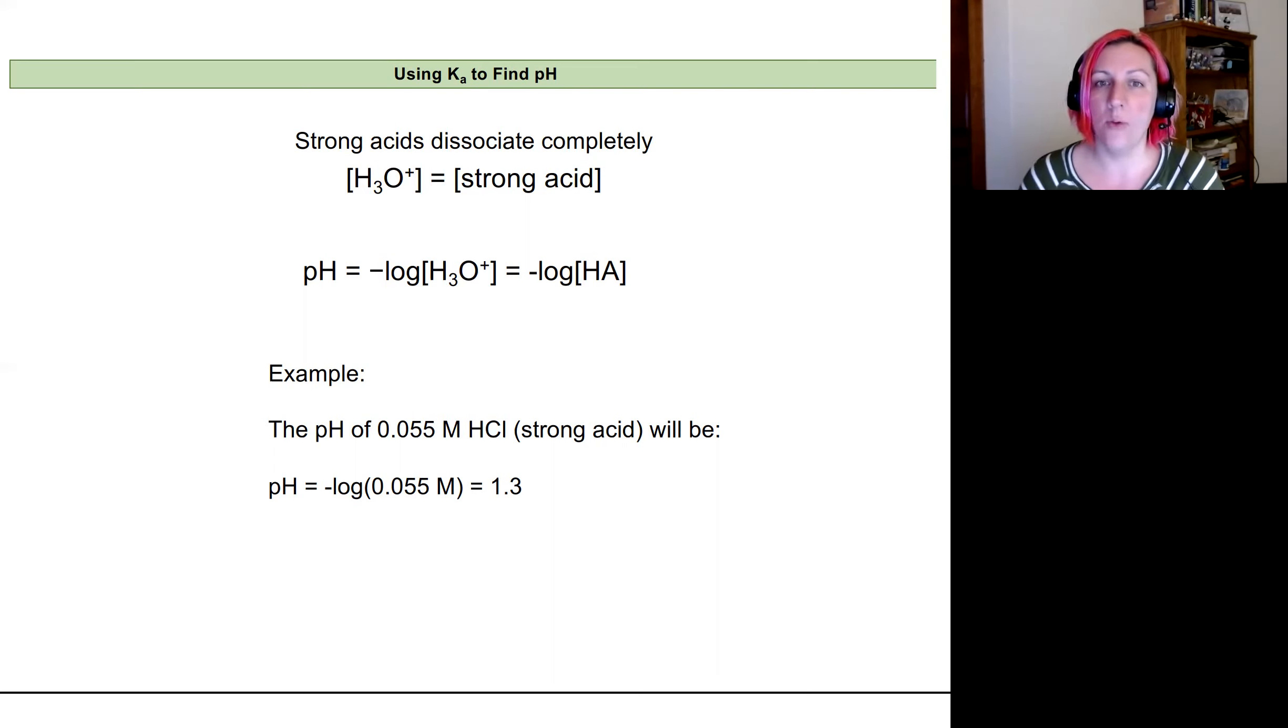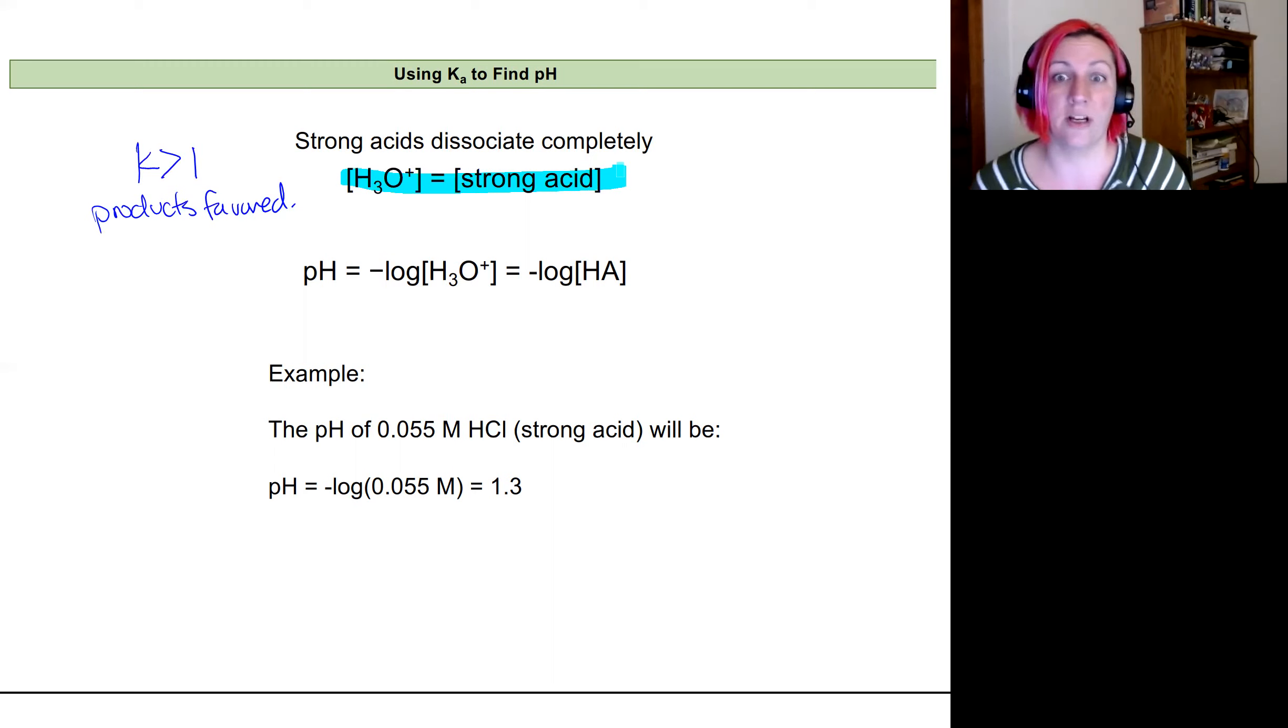So if we have a strong acid, then we are going to assume that the strong acid dissociates completely. These are going to be cases when K is larger than 1. So products are going to be favored, usually significantly. And so we can make this assumption and get to a very reasonable answer.